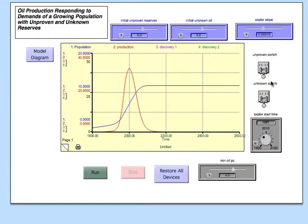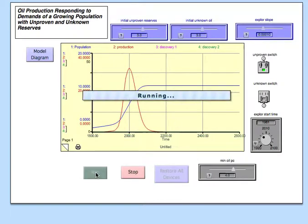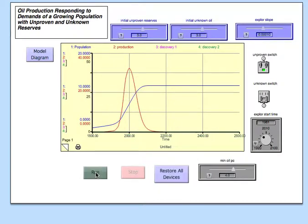Now if I turn on this unproven switch here and run the model, you can see the production curve changes. See, that gets bumped out basically because of the addition of this oil here produced by discovery.